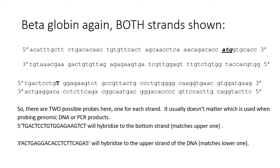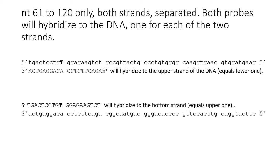The oligo with the same sequence as the upper strand will hybridize to the bottom strand, and the one that matches the lower strand will hybridize to the upper strand. So when probing double-stranded genomic DNA, you can choose either oligo — it doesn't matter. This one will hybridize to the upper strand; the other will hybridize to the bottom one.